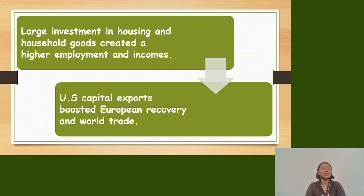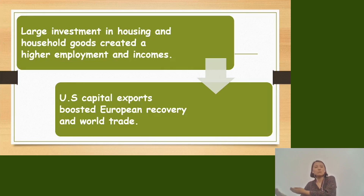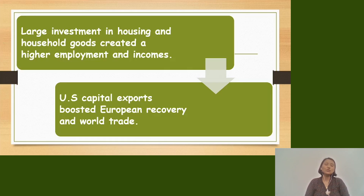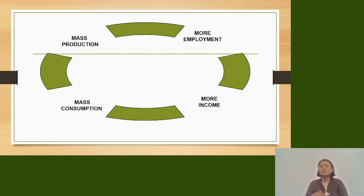Not only did the USA improve its economy, but the USA also started exporting its capital to other countries. US capital helped other European countries improve their economies. US capital exports also boosted world trade. Mass production led to mass employment, which led to higher income, which in turn led people to demand and buy a large number of goods.